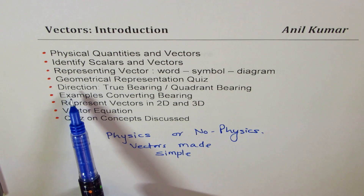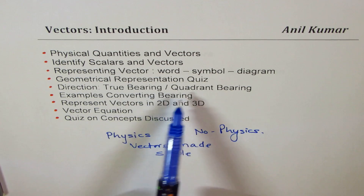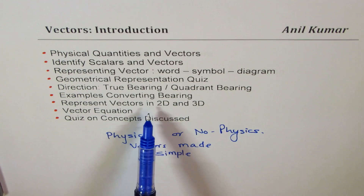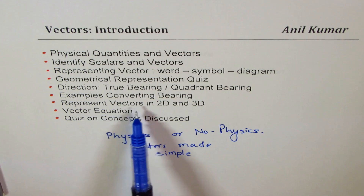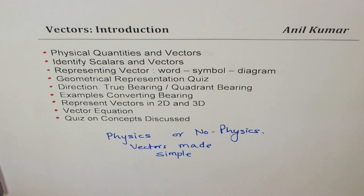Vectors have both magnitude and direction, and there are two common ways of representing direction of vectors. One is called true bearing, the other one is quadrant bearing. We'll look into these and have a few examples to convert from one to the other. Vectors can be represented in two dimensions — R2 or the Cartesian plane — and also in three dimensions. Then we'll have some vector equations and a small quiz to make sure we understand all the concepts in this introduction to vectors.